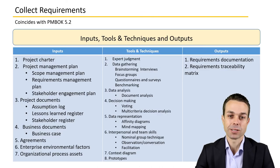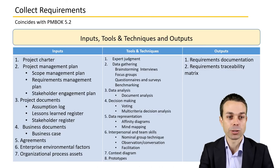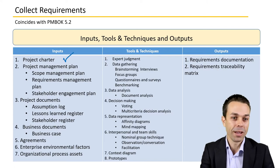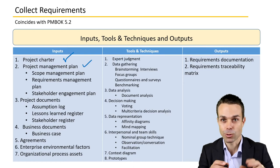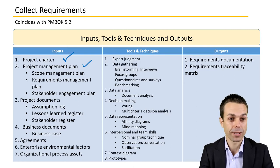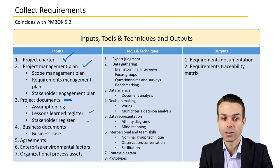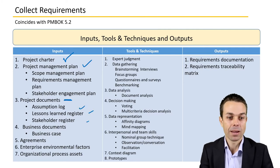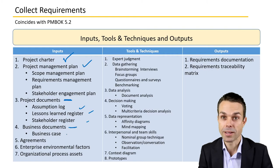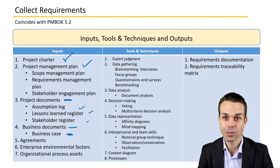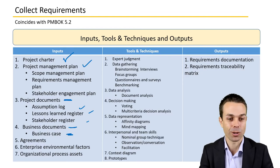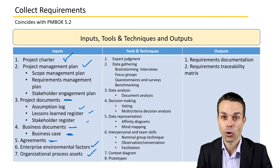The inputs, tools and techniques, and outputs for collecting requirements: inputs include the project charter — our initial high-level view — the project management plan, project documents we need to update, lessons learned, stakeholders, assumptions, and business documents. The initial business case has all of those initial requirements as well. Any agreements that have been made, and enterprise environmental factors and organizational process assets.